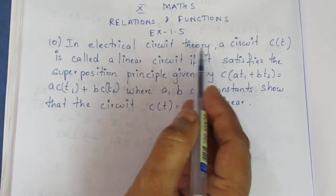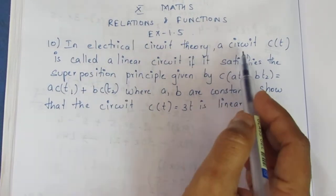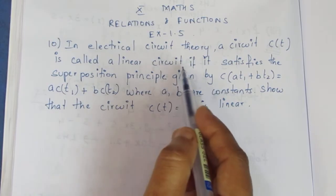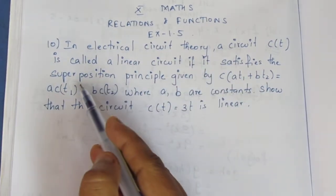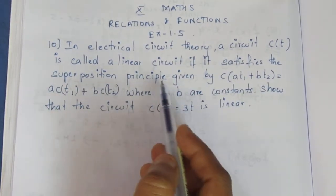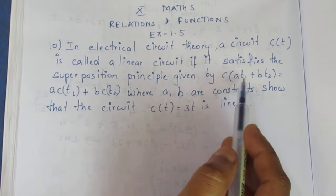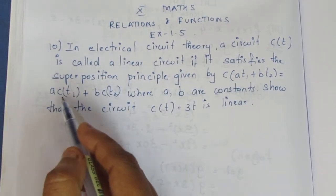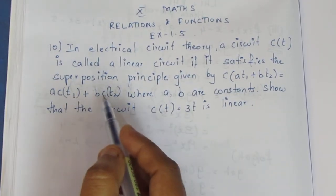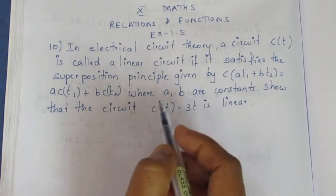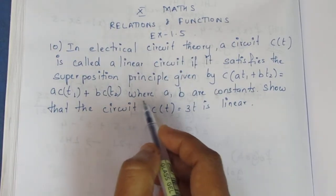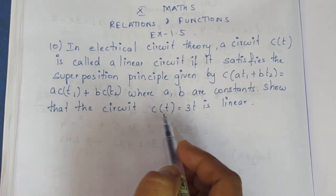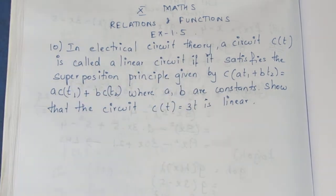In electrical circuit theory, a circuit C of T is called a linear circuit if it satisfies the superposition principle given by C of At1 plus Bt2 is equal to A·C(t1) plus B·C(t2), where A and B are constants. Show that the circuit C of T equal to 3t is linear.